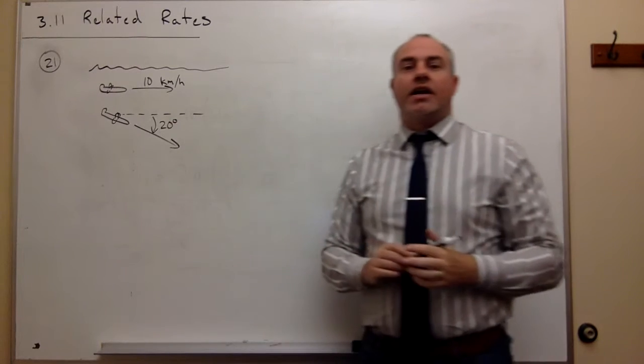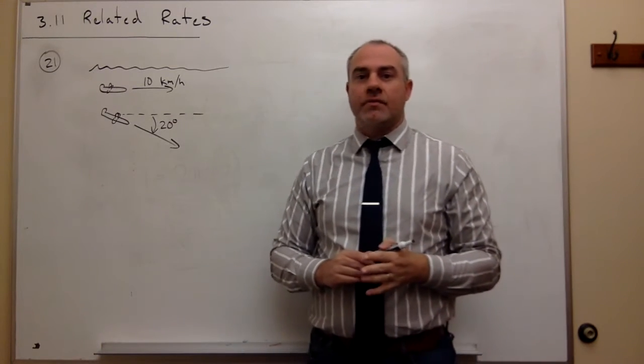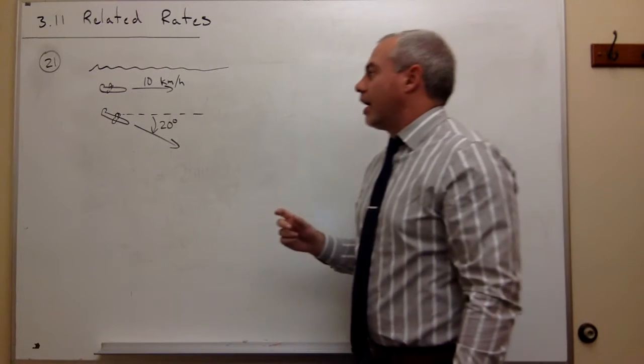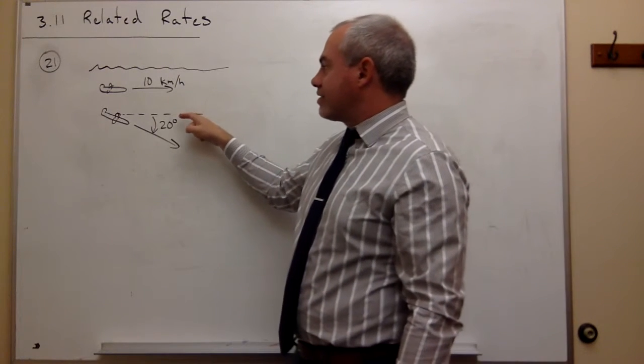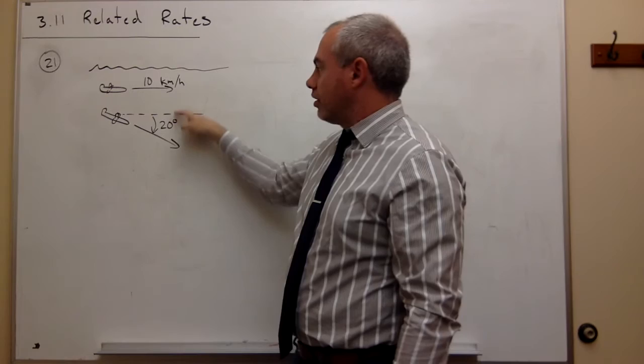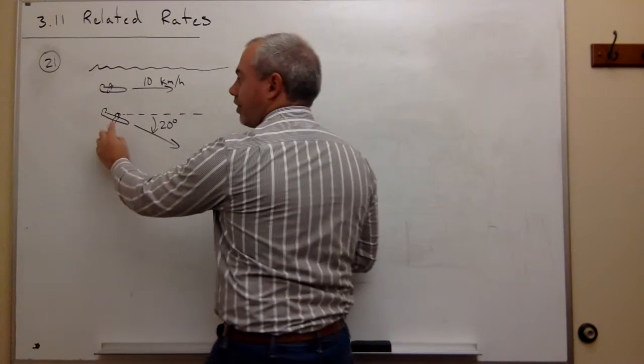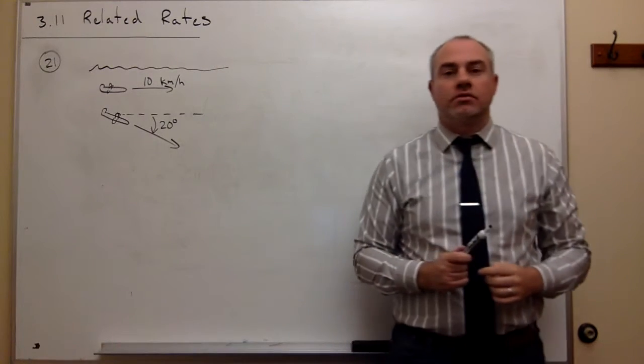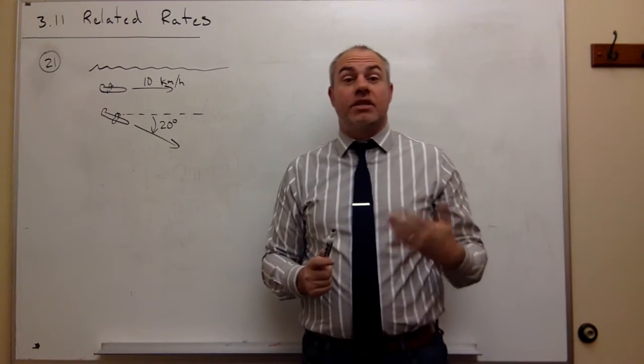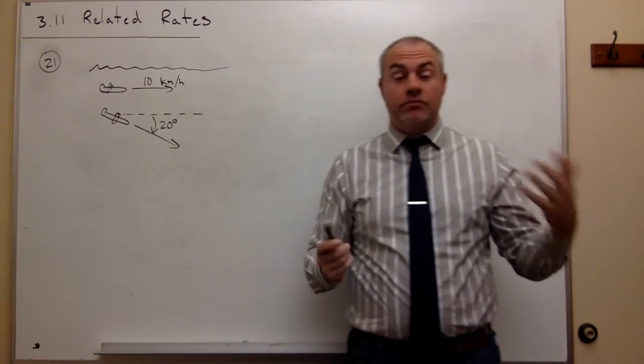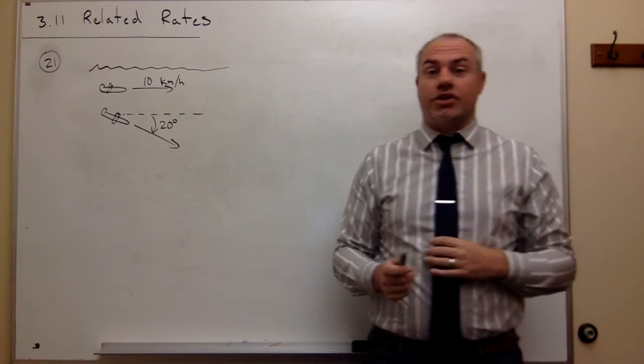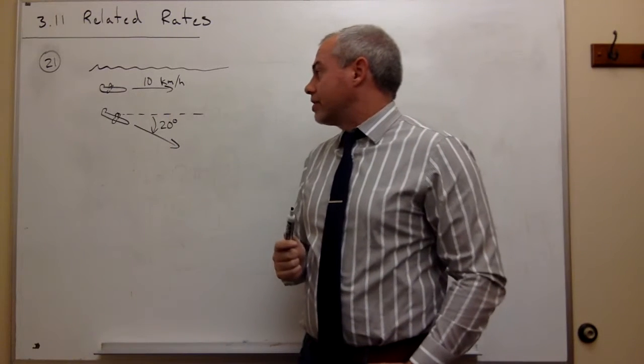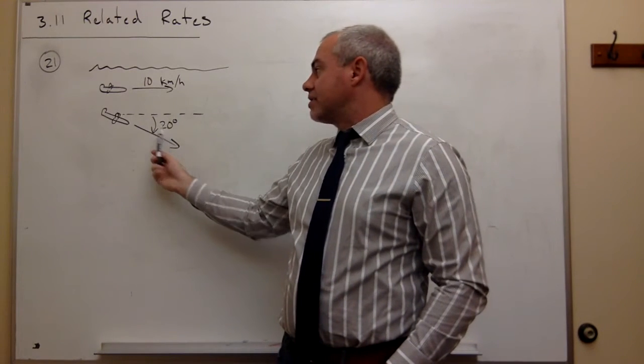The question in this problem is how fast is the vertical depth of this lower submarine changing, or how fast is the submarine diving. If it's maintaining its position under the first submarine and diving down at an angle of 20 degrees.